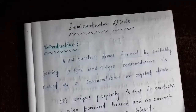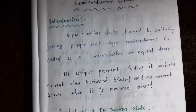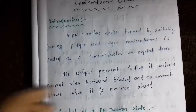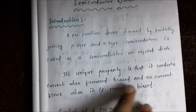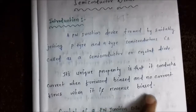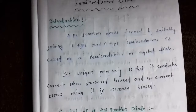It has one unique property: it conducts current in one direction only. It conducts only when it is forward biased, and no current flows through it — that is, conduction is zero — when it is reverse biased. It permits the flow of current only in a single direction. It is unidirectional.